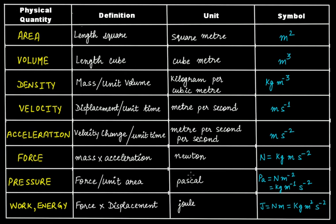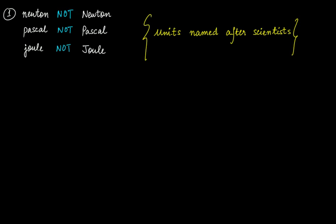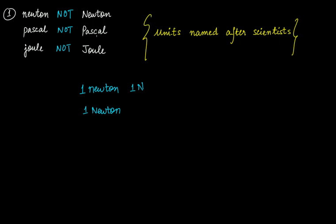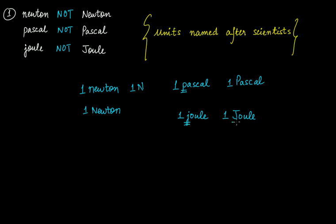Newton, Pascal, and Joule — these three units are named after three scientists. An important point: when writing units named after scientists, you use a lowercase letter. For example, it is one newton — lowercase 'n' — not one Newton with uppercase. Similarly, it is one pascal — lowercase 'p' — and one joule — lowercase 'j'. Always use the smaller case letter for units.